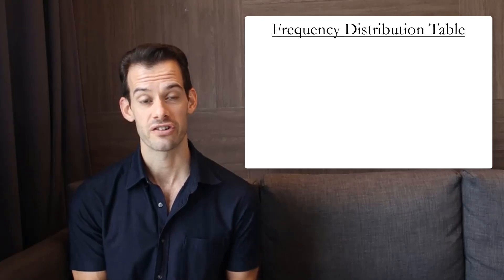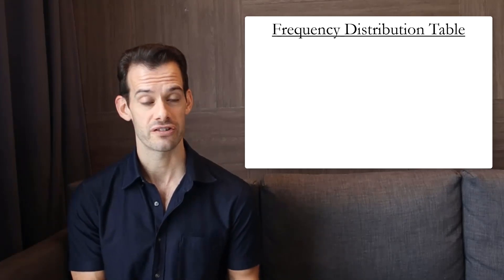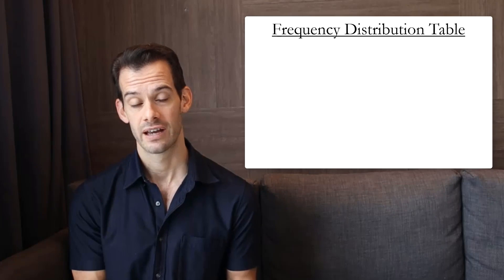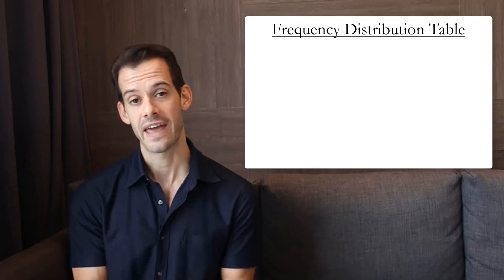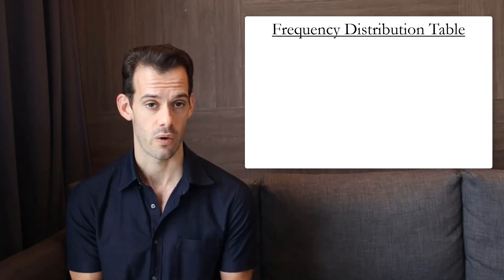Hi, I'm Michael Correa and this is Psych Exam Review. A frequency distribution table shows us a summary of our data and it shows us the possible values of x in ascending order and then in the next column it shows us the frequency of those scores.